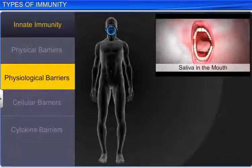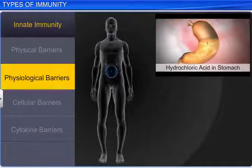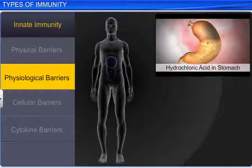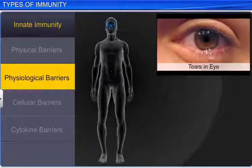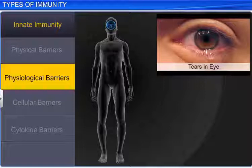Saliva in the mouth, hydrochloric acid inside the stomach, as well as tears in the eyes, act as physiological barriers to microbial invasion.